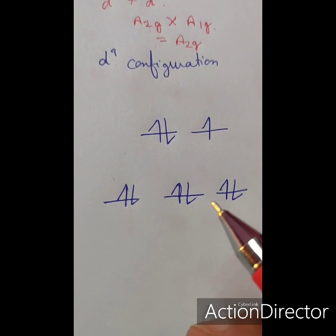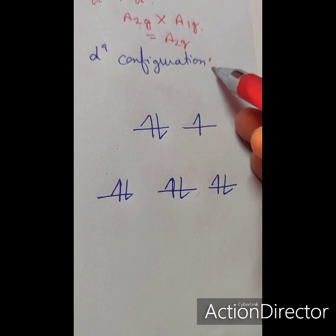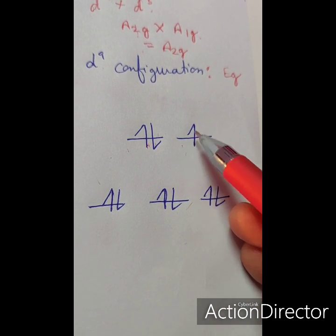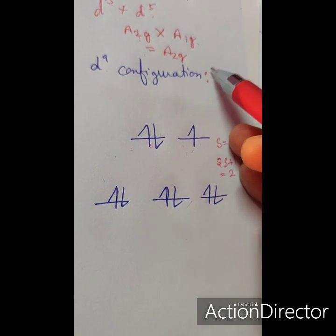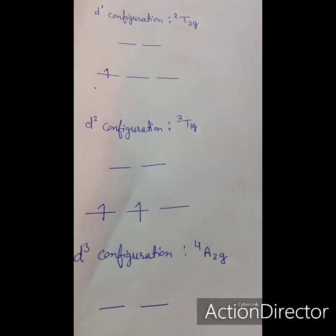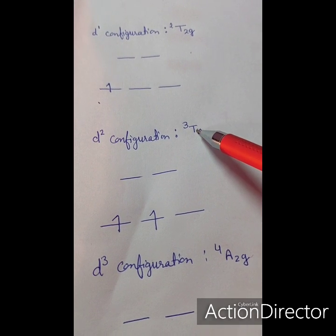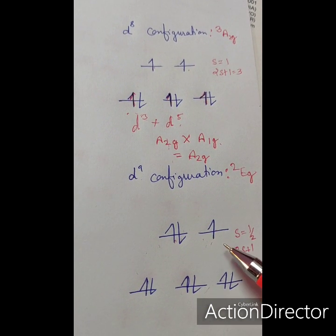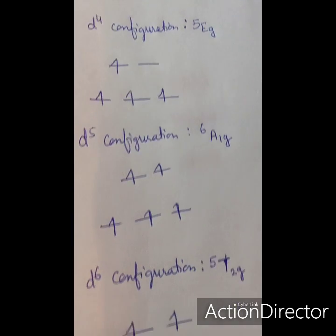For d9 configuration, the eg set is asymmetrically filled — one pair may be in either orbital — making it doubly degenerate, so the term is Eg. With one unpaired electron, S=½ and multiplicity=2, giving ²Eg. To summarize: d1 → ²T₂g, d2 → ³T₁g, d3 → ⁴A₂g, d8 → ³A₂g, and d9 → ²Eg. These five configurations have the same terms in both high spin and low spin complexes.